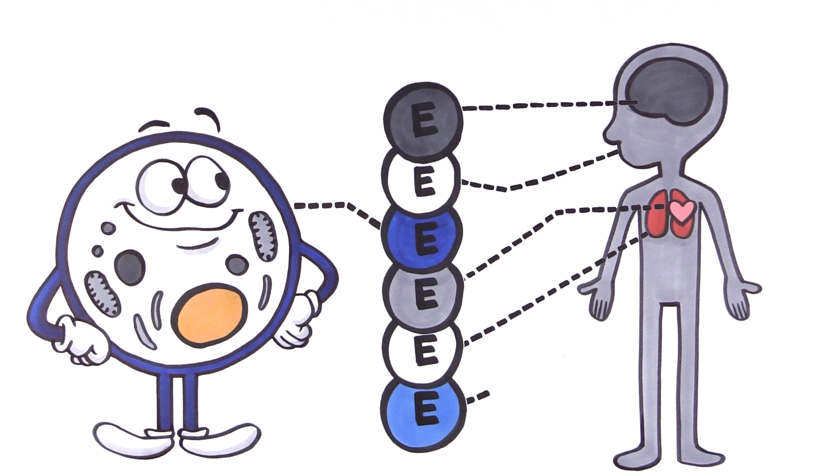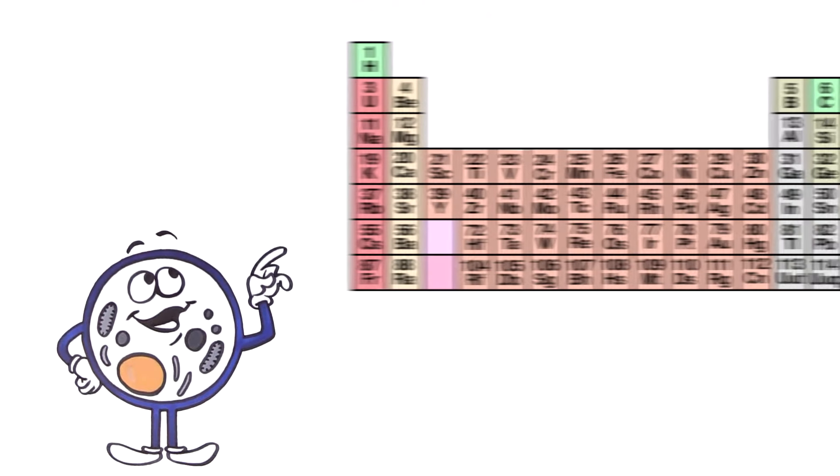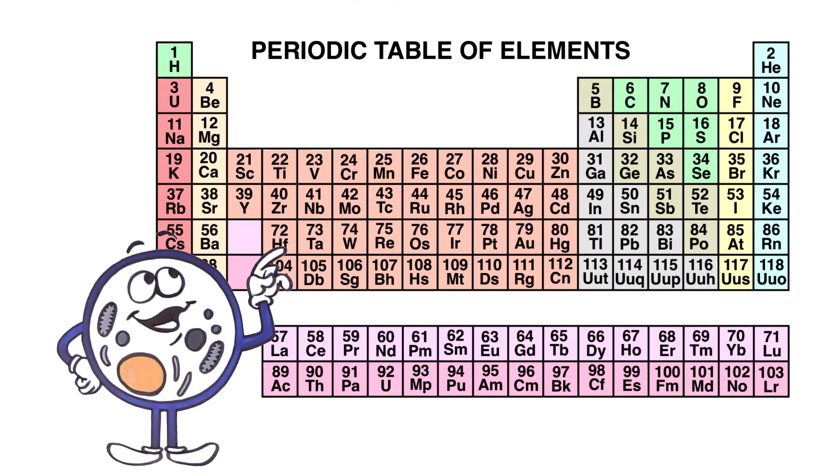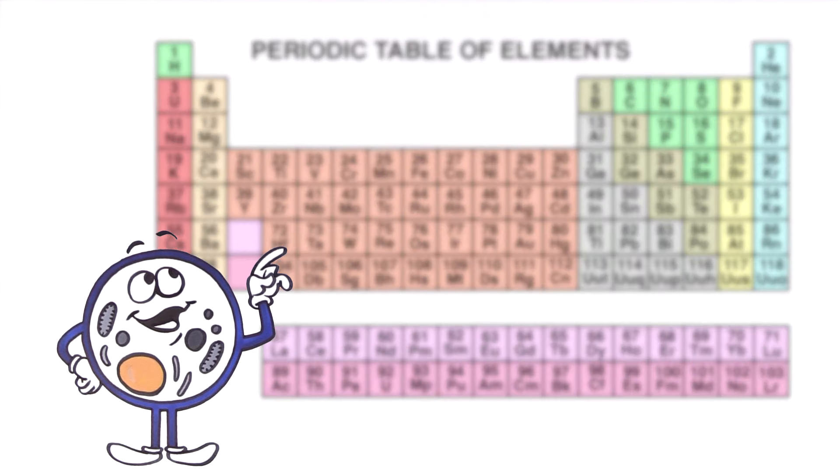But what happens when the right mineral is not available in our diet? Well, fortunate for you, we're smarter than a walkie-talkie. You see, if the proper mineral isn't available, my fellow cells and I can use the next closest mineral on the atomic weight schedule that allows us to send and receive messages. But this isn't ideal because the wrong mineral can make the message fuzzy.